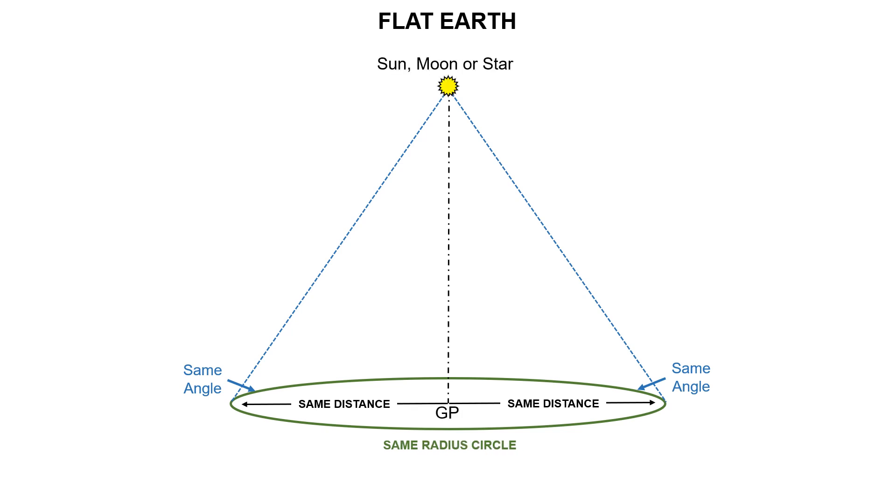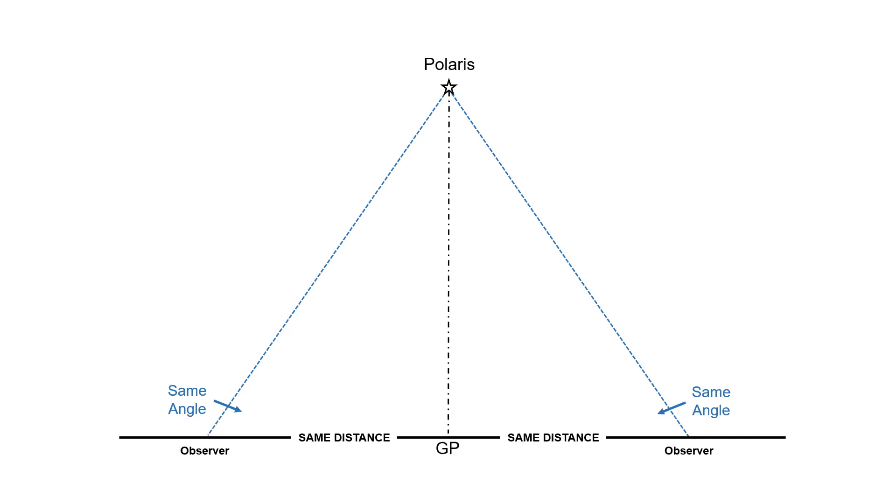And in the case of the Sun, Moon, or a star, it would be a circle on the surface of the Earth with the ground position as the center of that circle.